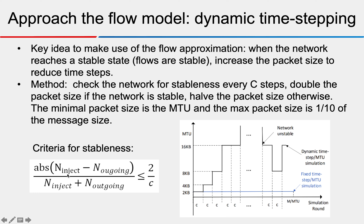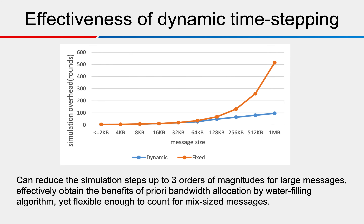How do we check for stability? It's very simple: the difference between injecting packets and outgoing packets must be very small. The effect of dynamic time stepping is that we can increase the MTU exponentially, thereby decreasing the simulation steps needed exponentially. As shown in this picture, we can reduce simulation steps by up to three orders of magnitude for very large messages. We effectively obtain the benefits of a priori bandwidth allocation by the water-filling algorithm, yet remain flexible enough to handle mixed-sized messages — batches containing both small and large messages.